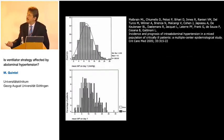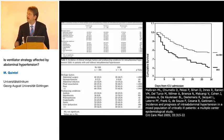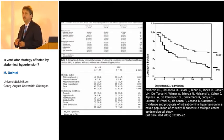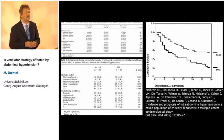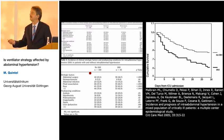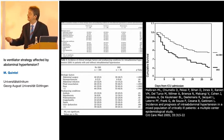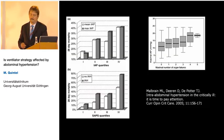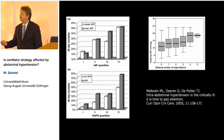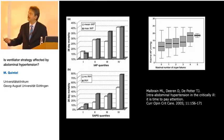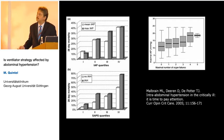This is another study from Manu Malbrain's group, showing a relation between patient outcome and increased intra-abdominal hypertension. Looking at 28-day mortality, there is a marked increase in mortality in patients with increased intra-abdominal hypertension. It is also closely related to the number of organ failures — the higher your abdominal pressure, the more organ failures you see — and it correlates with the SOFA score and other organ failure scores.